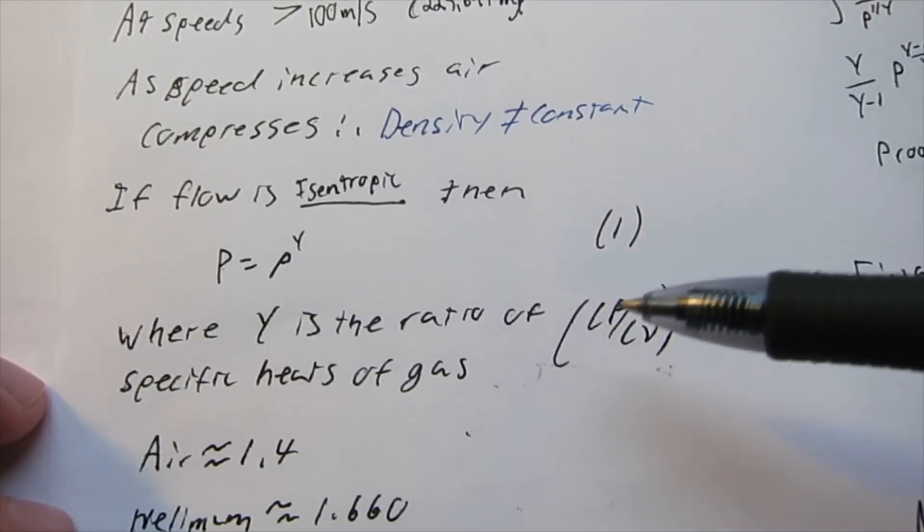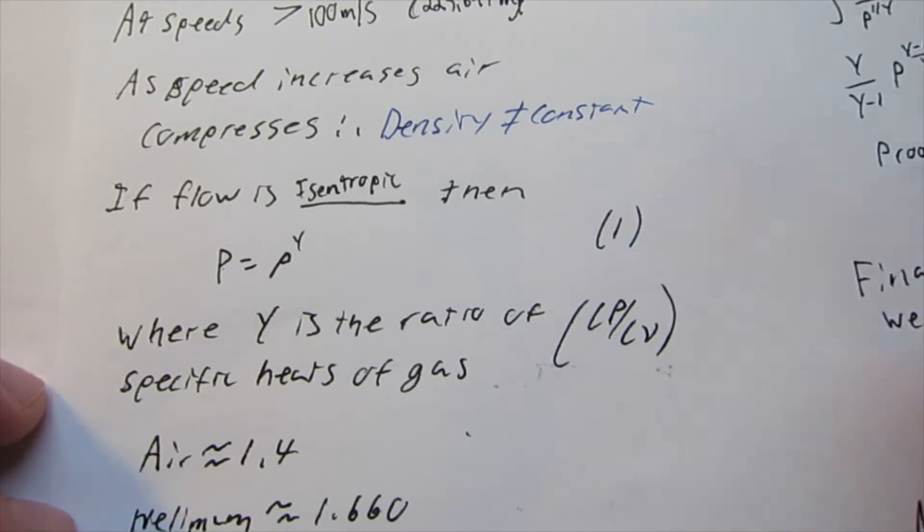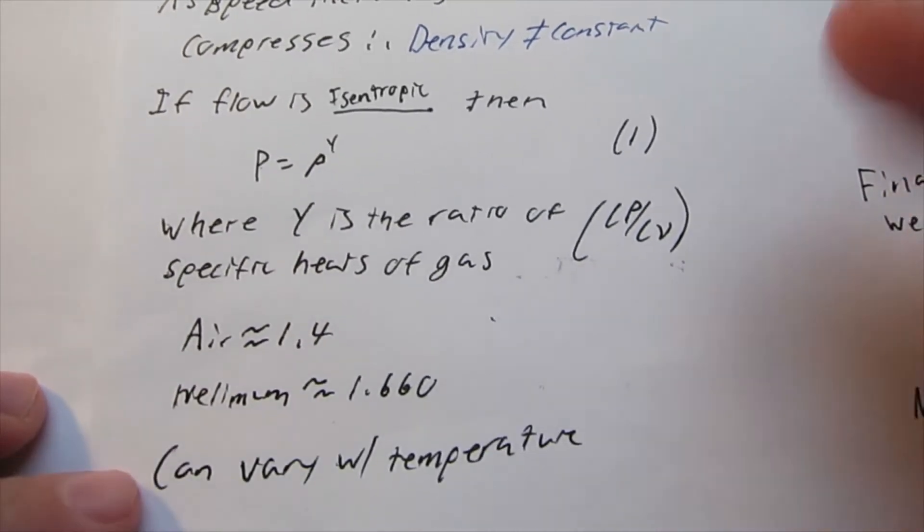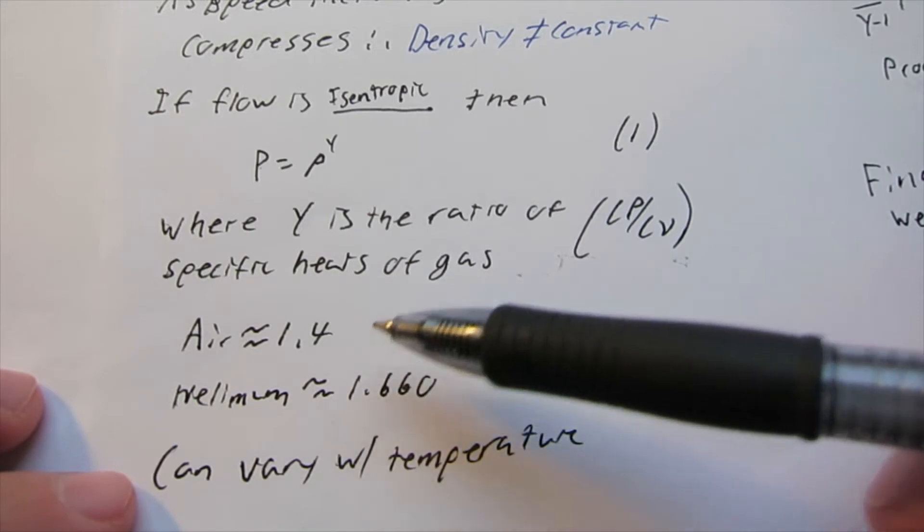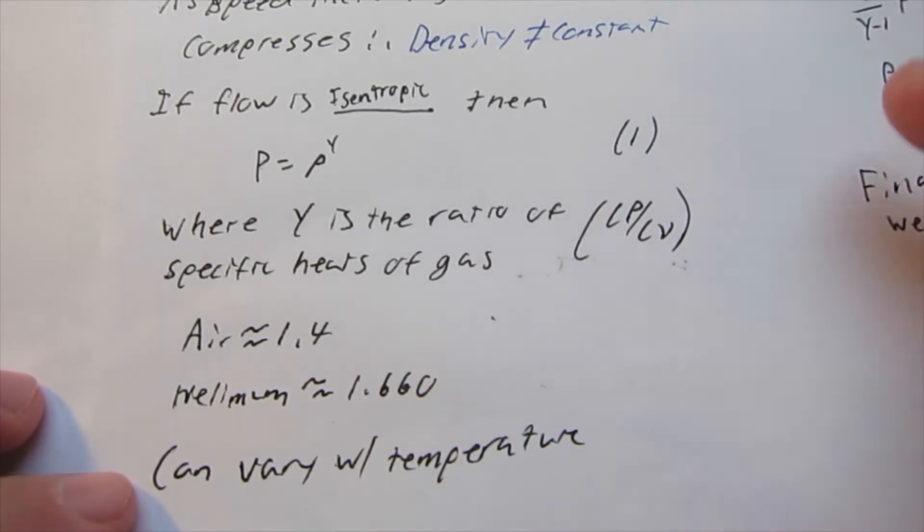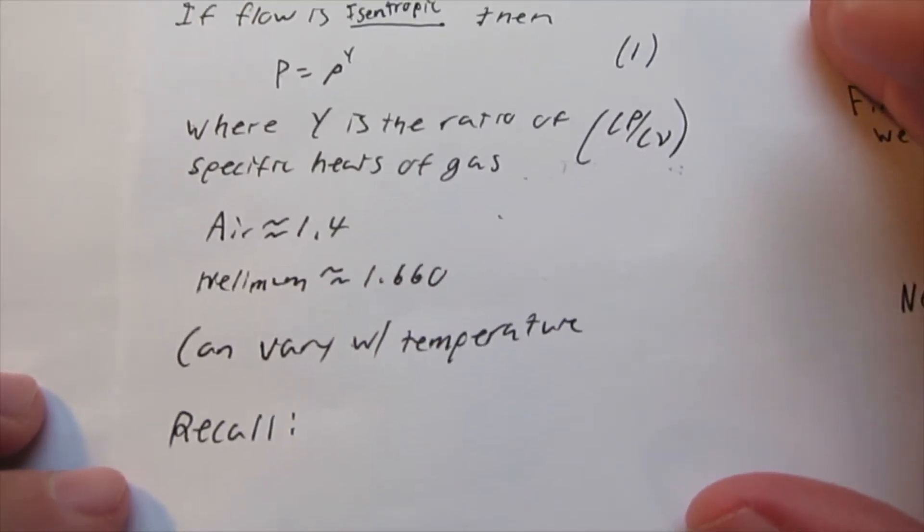You might have seen that in a gas dynamics class. So air is about 1.4, and helium is about 1.660, and this varies with temperature.